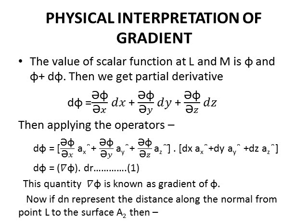The value of scalar function at L and M is phi and phi plus d phi. Then taking partial derivative, d phi equals del phi upon del x dx plus del phi upon del y dy plus del phi upon del z dz.